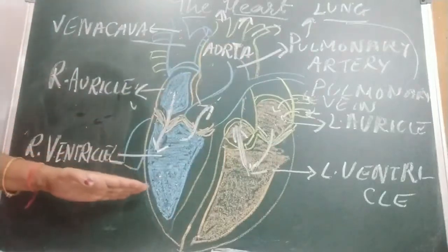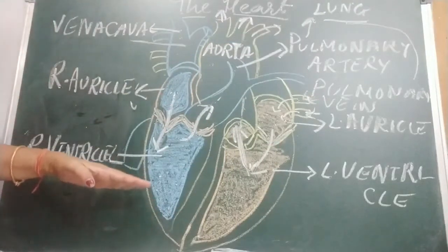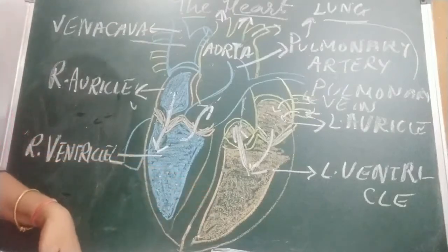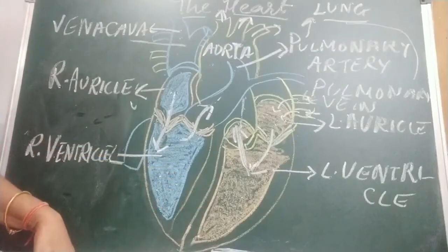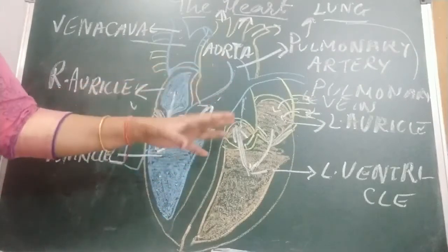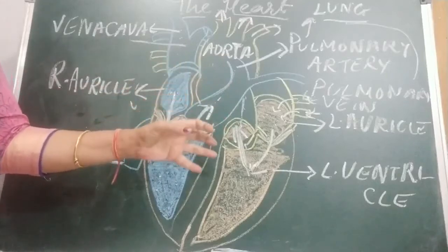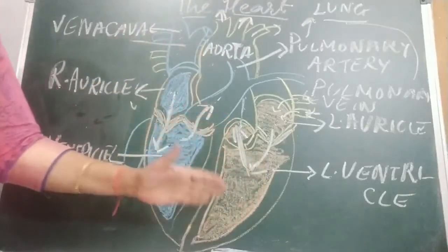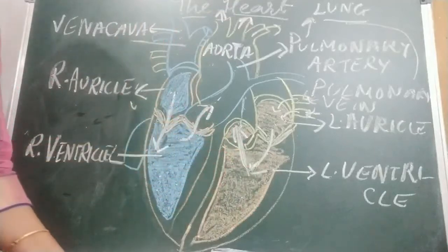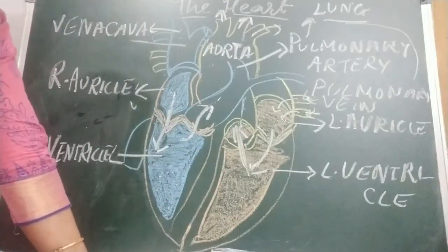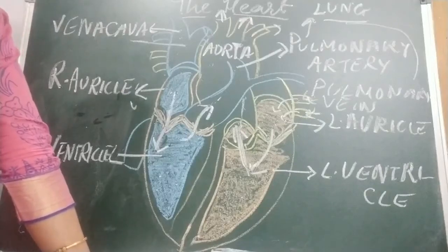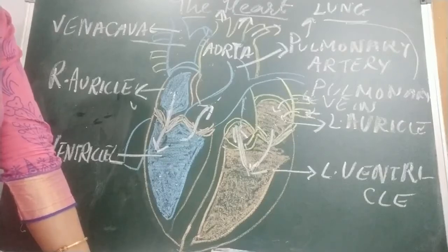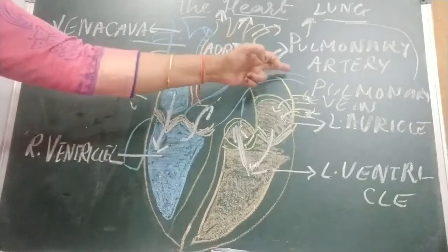The left ventricle has a thicker wall because it pumps blood to the farthest parts of the body through the aorta. It contracts powerfully so blood moves very fast, and the thick walls prevent damage. Generally, arteries carry pure blood and veins carry impure blood. The exceptions are the pulmonary artery and pulmonary vein.